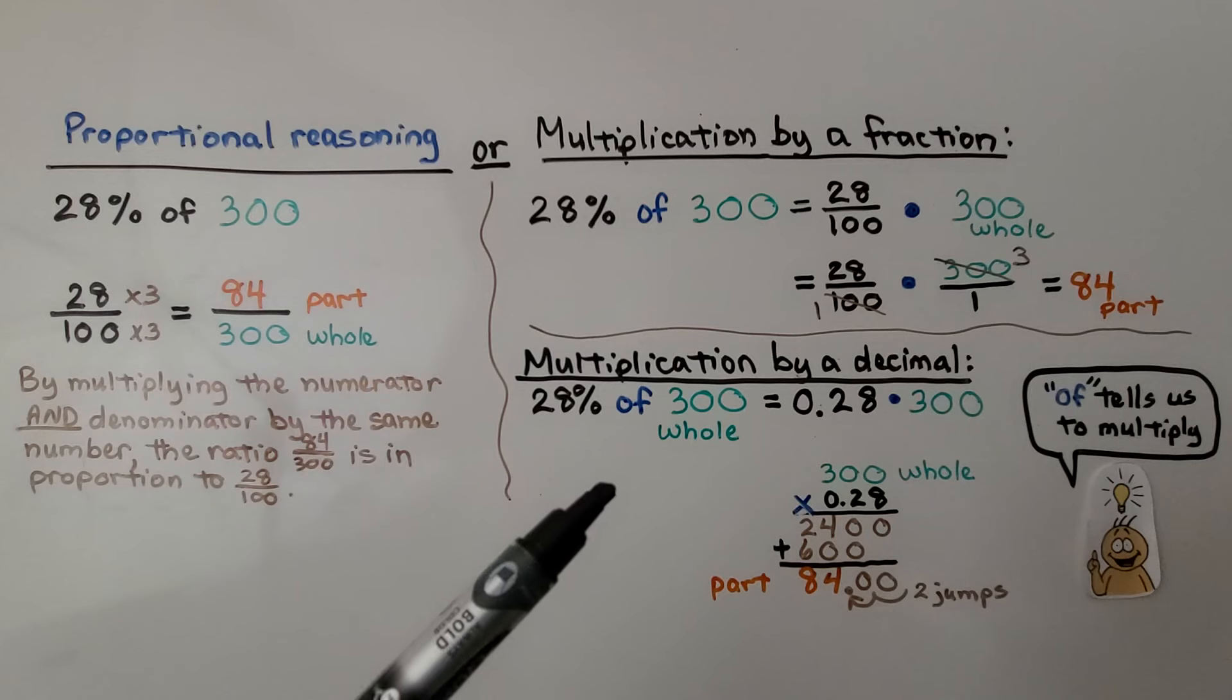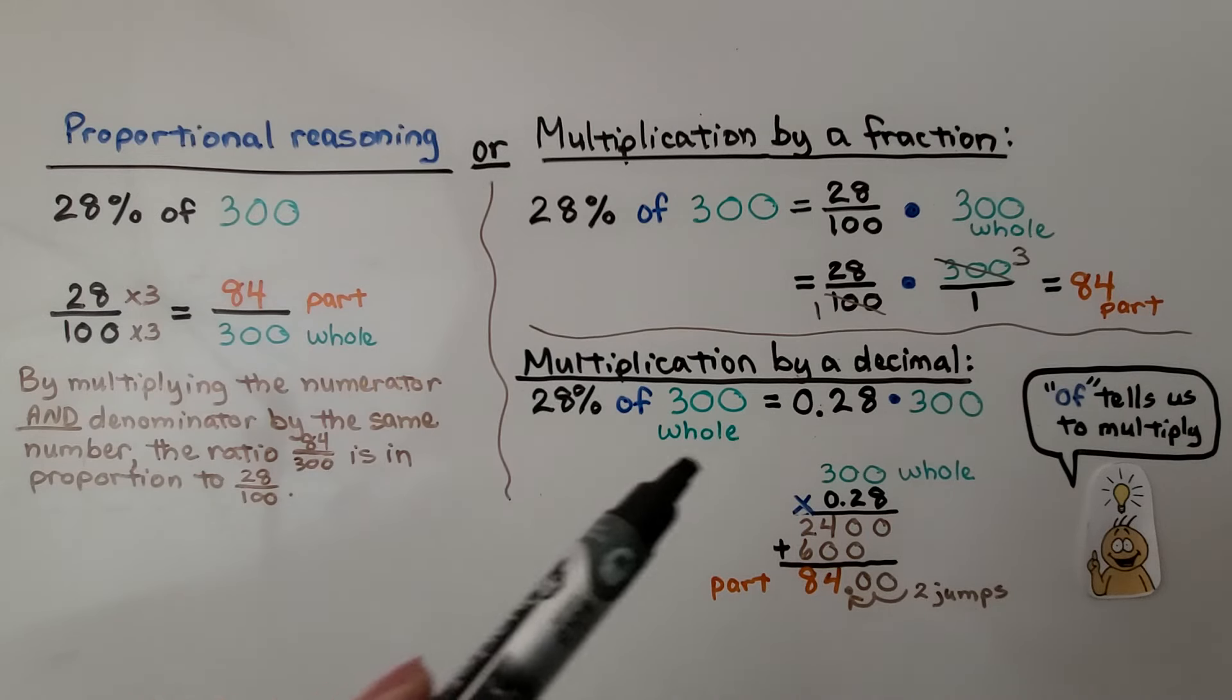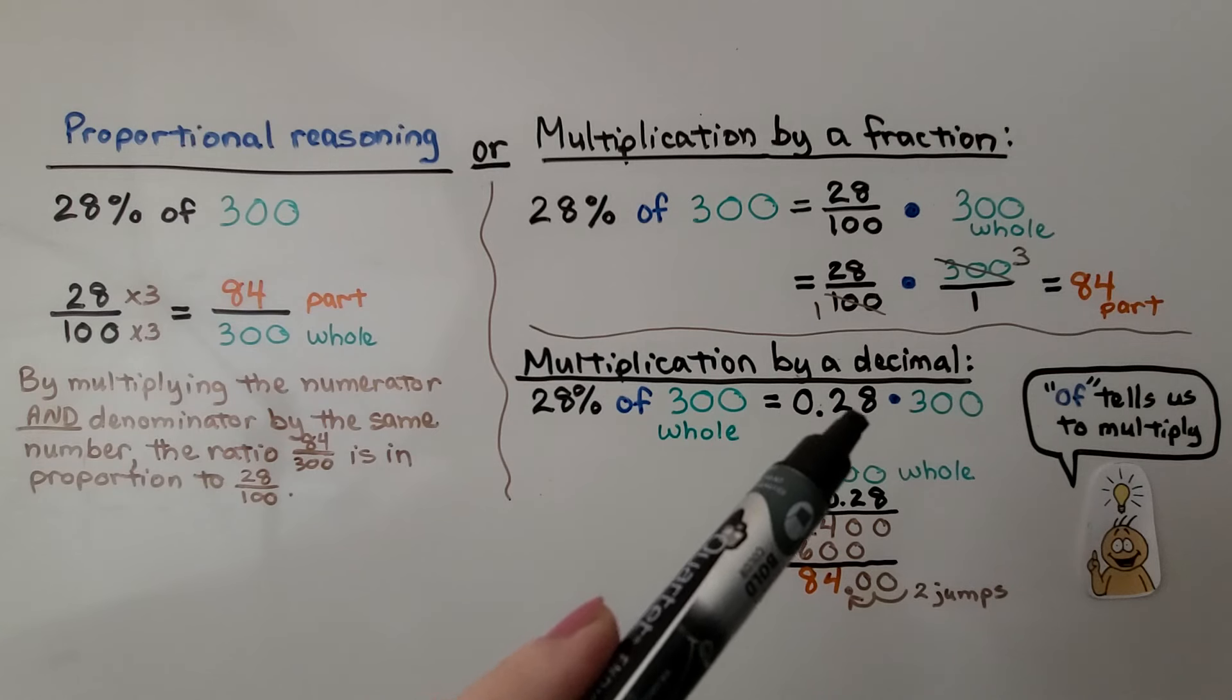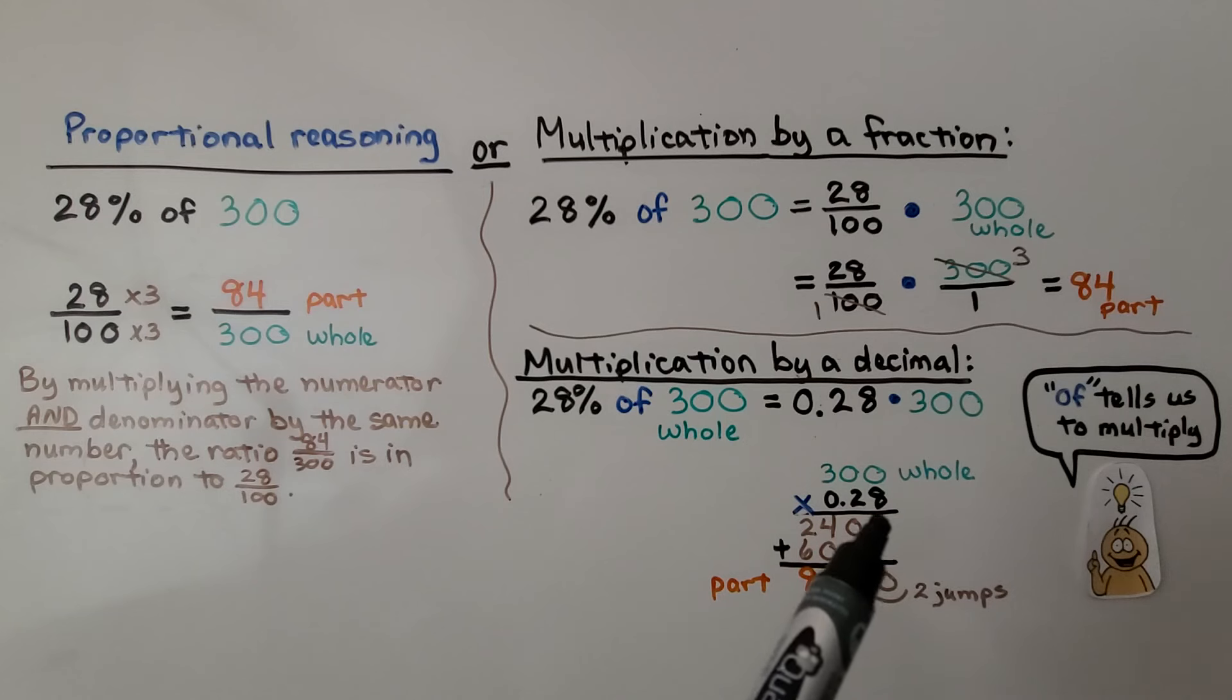We can also find the percent of a number with multiplication by a decimal. 28% is 0.28, and we can multiply that by 300, and we have two decimal hops in the problem, so there's going to be two decimal hops in the product, and we get 84.